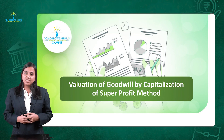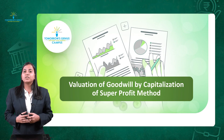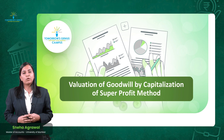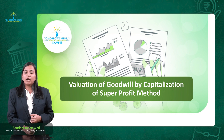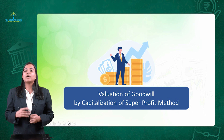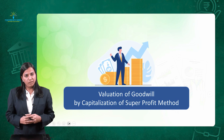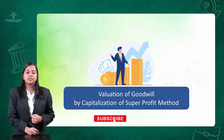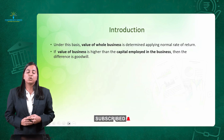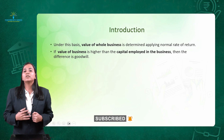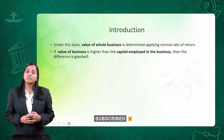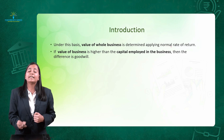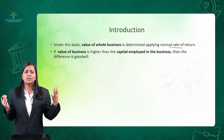In the last video I covered the second method of super profit — the annuity method. In this video I will be covering the topic: valuation of goodwill by capitalization of super profit method. Under this method, we are trying to calculate the value of the whole business, which is determined by applying the NRR — normal rate of return.